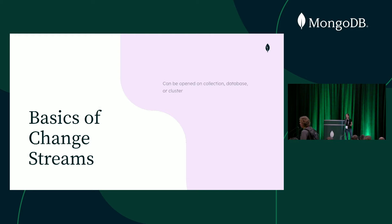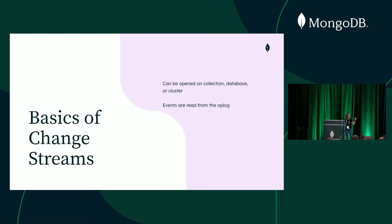Some basic things about change streams: you can open a change stream on a collection, on a database, or on the entire cluster. Events originate from the oplog, which is used for replication — so you need a replica set with the oplog. Change stream events can be started in the past, so you can read events that happened in the past as long as you stay within the oplog window, which is configurable by time or by size. You can resume from the point of the last event you saw.